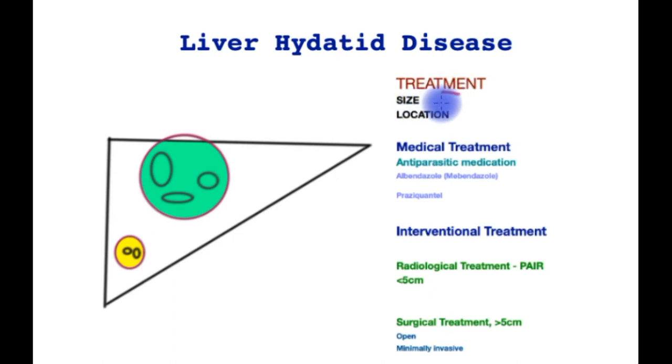The treatment of the hydatid cyst is dependent upon the stage of the disease, the size of the cyst within the liver, and its location. Almost all patients who are being actively treated will require medical treatment which kills off the parasites and the daughter cysts. The primary agent is a drug called albendazole. It has a cousin called mebendazole and sometimes it is combined with another drug called praziquantel.